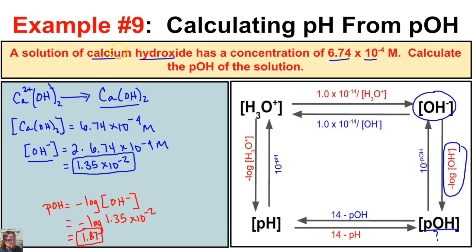Keep in mind that whenever you have hydroxide bonded to an atom from group 2 on the periodic table, you need to look at how it dissociates. If there's a subscript 2, you'll probably need to multiply the concentration by 2, provided it's bonded to a group 2 atom.